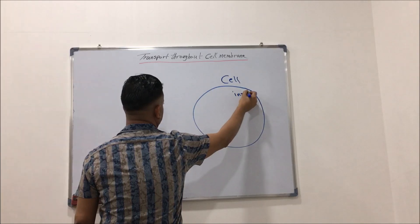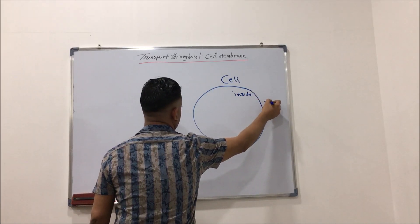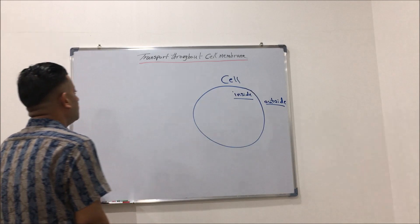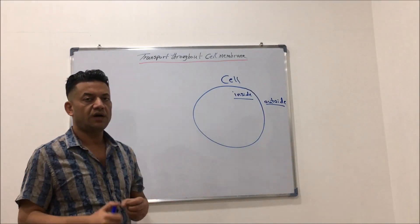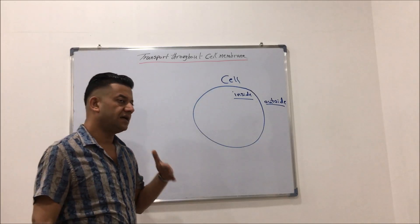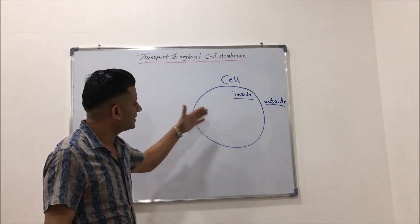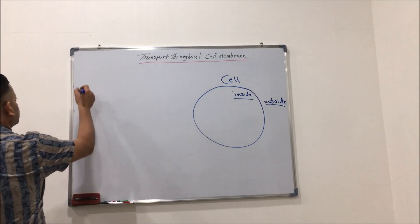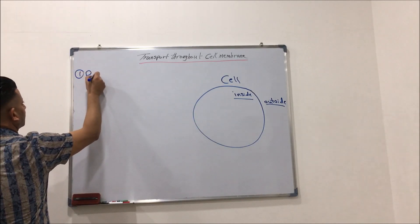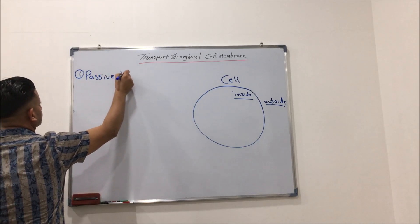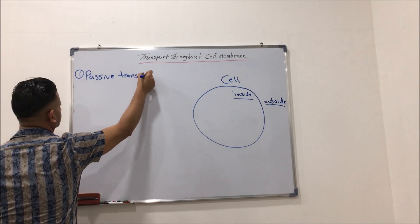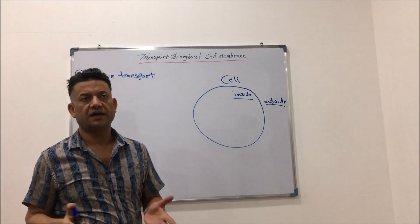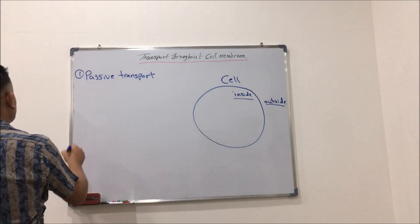Here is the inside and here is outside of the cell. We have different mechanisms through which molecules and substances can pass from outside to inside of the cell, and vice versa from inside to outside of the cell. One of these mechanisms is passive transport.